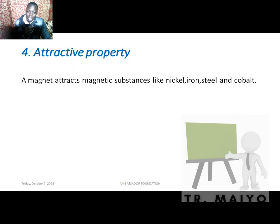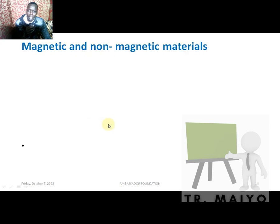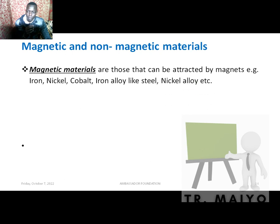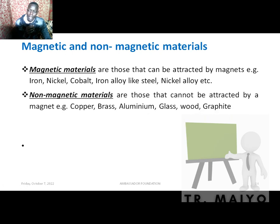The attractive property: a magnet can attract certain magnetic materials like nickel, iron, steel, and cobalt. Not all metals are magnetic. Magnetic materials are those that can be attracted by magnets — examples include iron and nickel. Non-magnetic materials are those that cannot be attracted by a magnet — for example, copper, brass, aluminium, glass, wood, and graphite. All non-metals are non-magnetic, and some metals like copper, brass, and aluminium are also non-magnetic.